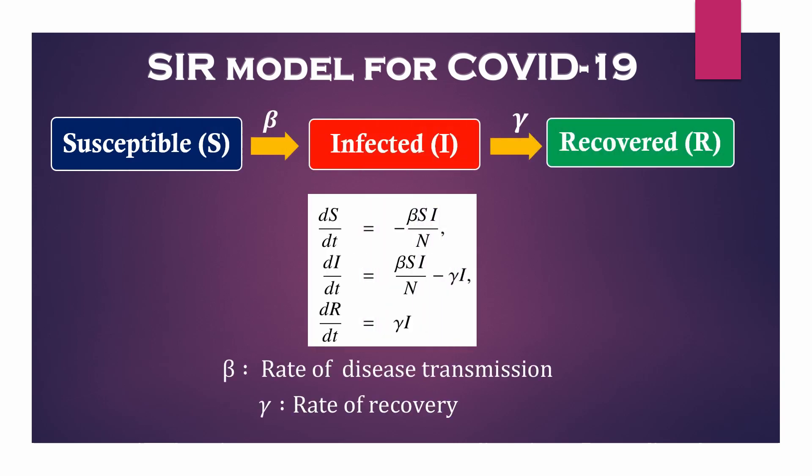Susceptible people become infected by the already infected subpopulation at rate beta, which is the rate of disease transmission. Infected individuals recover at rate gamma, which is the rate of recovery.